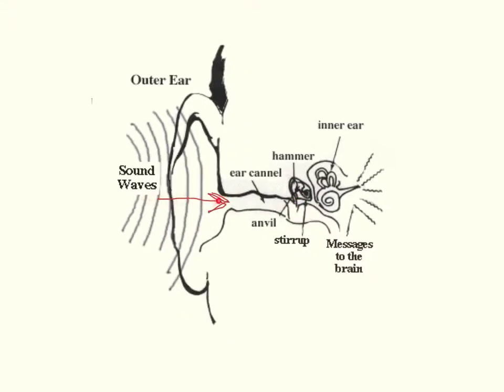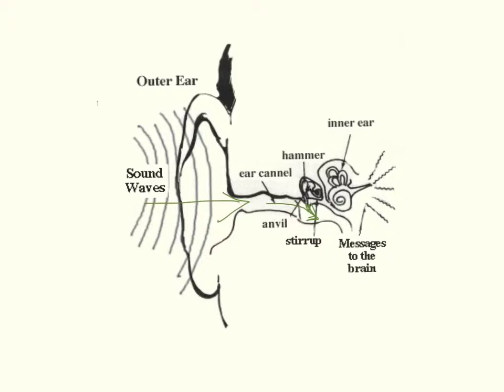The eardrum vibrates when the sound waves or sound vibrations hit it. When it vibrates, it moves a series of tiny bones in the middle ear.